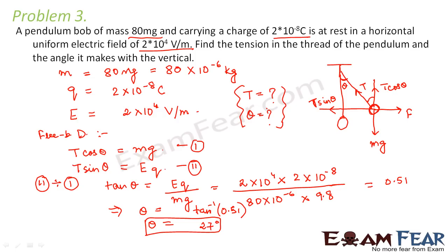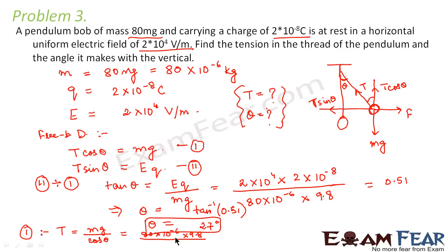The other part asks for the tension. From equation 1, T equals mg divided by cos theta. Substituting m equals 80 into 10 to the power minus 6, g equals 9.8, and cos 27 degrees, this value comes out to be 8.81 into 10 to the power minus 4 newtons. That is the value of the tension. Thank you.